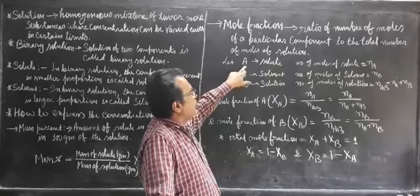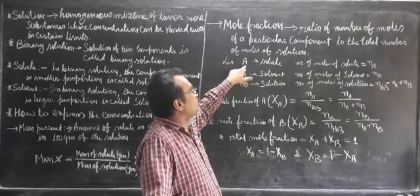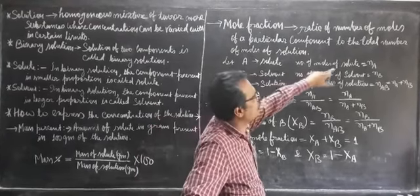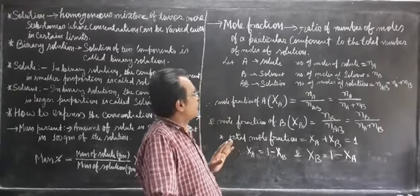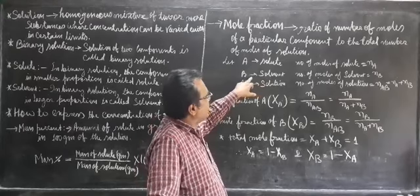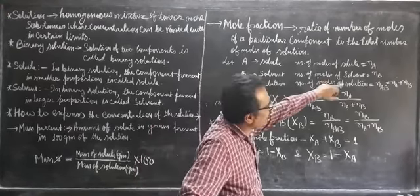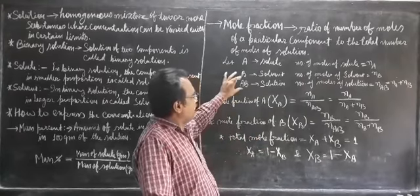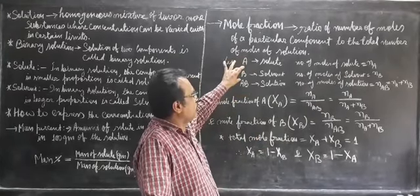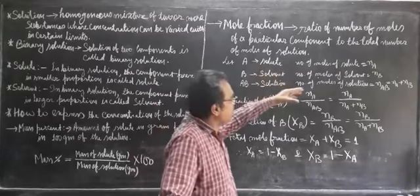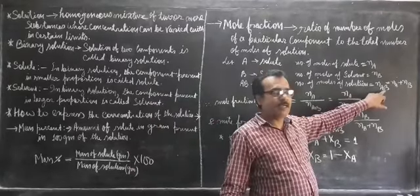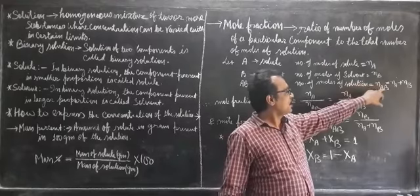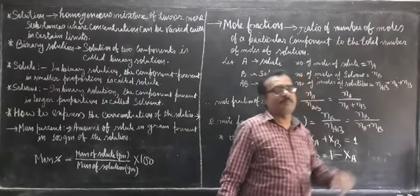Take a particular component A, which we consider as the solute. The number of moles of the solute is Na. The solvent is B, and the number of moles of the solvent is Nb. When A and B are mixed together, you get the homogeneous mixture AB, which is the solution. The total number of moles of the solution, NAB, must equal Na plus Nb, because these two components together make the solution.